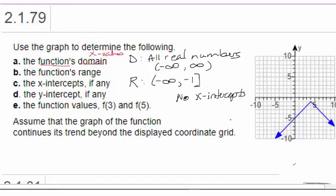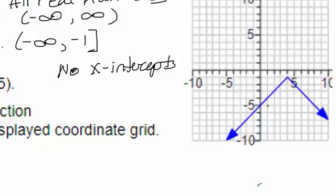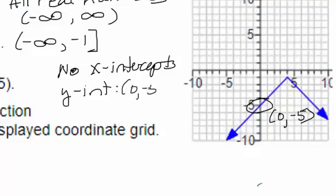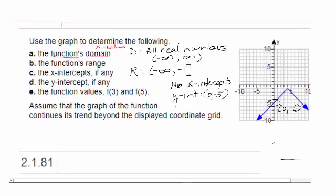And y-intercept, if any. So y-intercept is any point where the graph hits the y-axis. We see that happens here at 0, negative 5. So the y-intercept part D is going to be 0, negative 5. Or in MyMathLab, they might just ask you for the number negative 5. But technically, it's a pair of coordinates with the x-coordinate being zero.